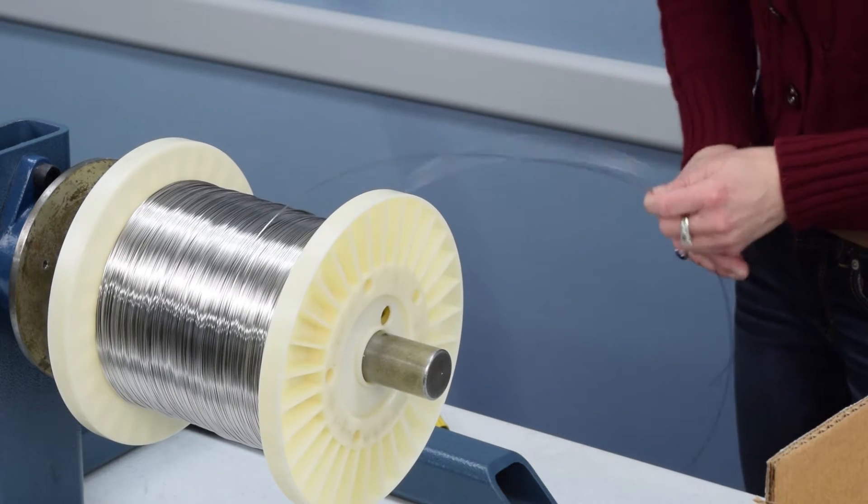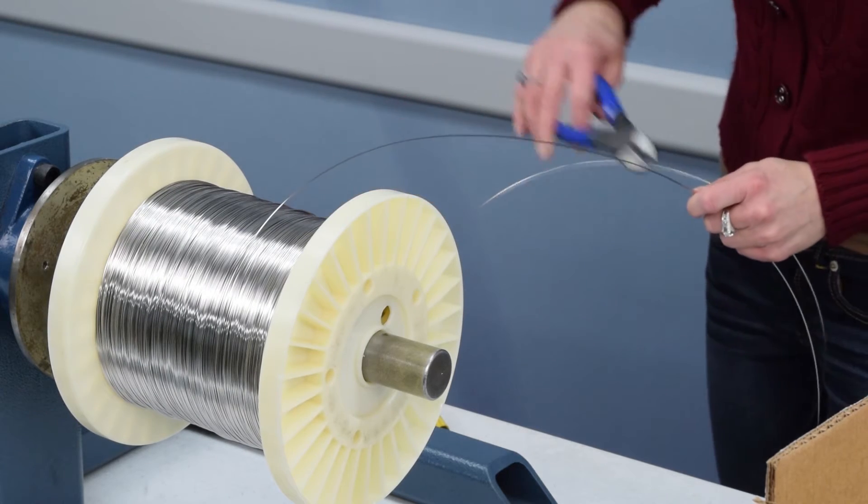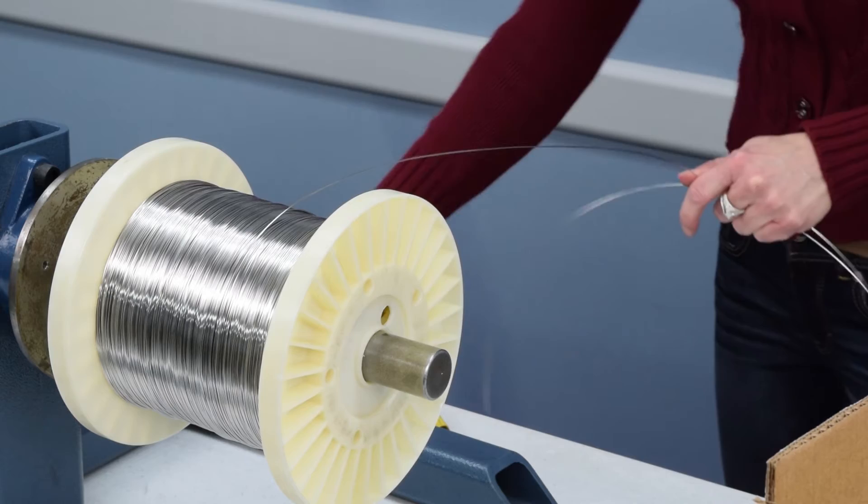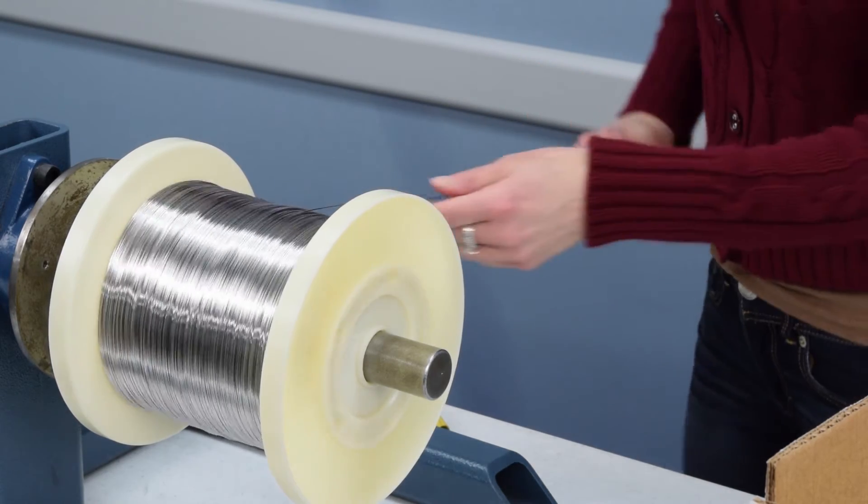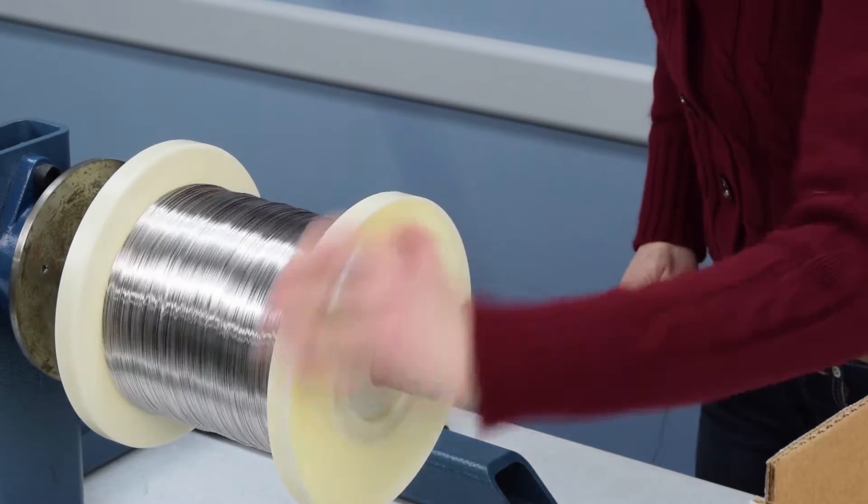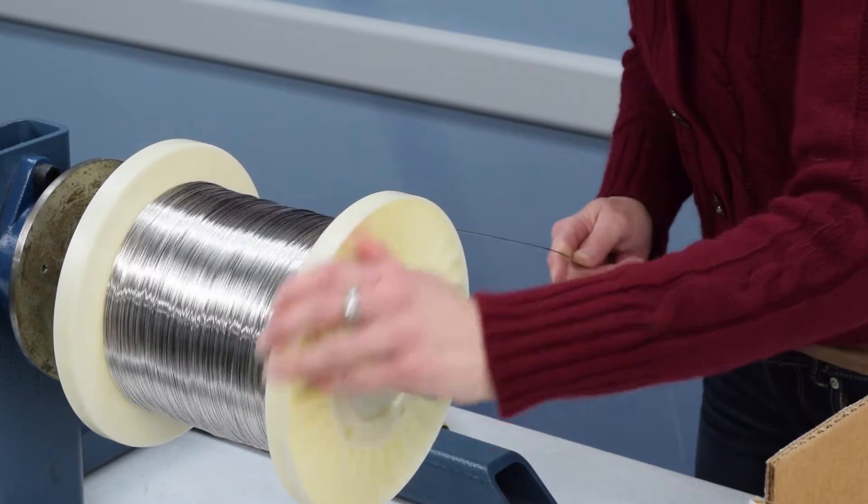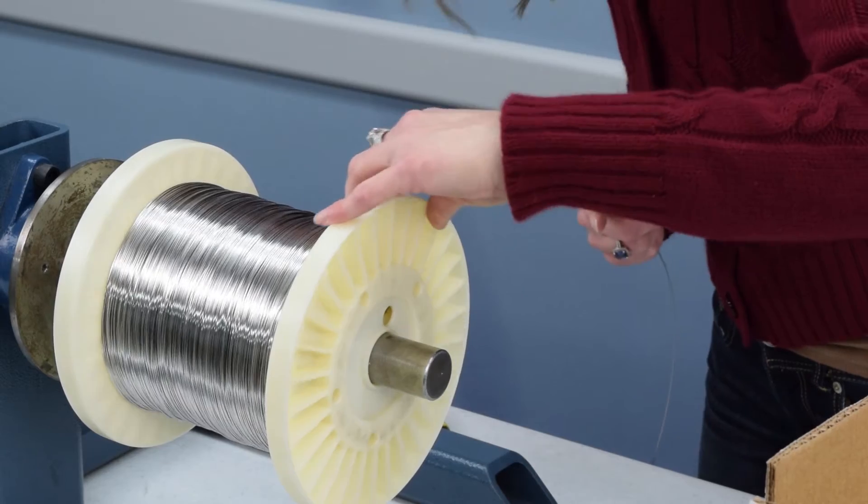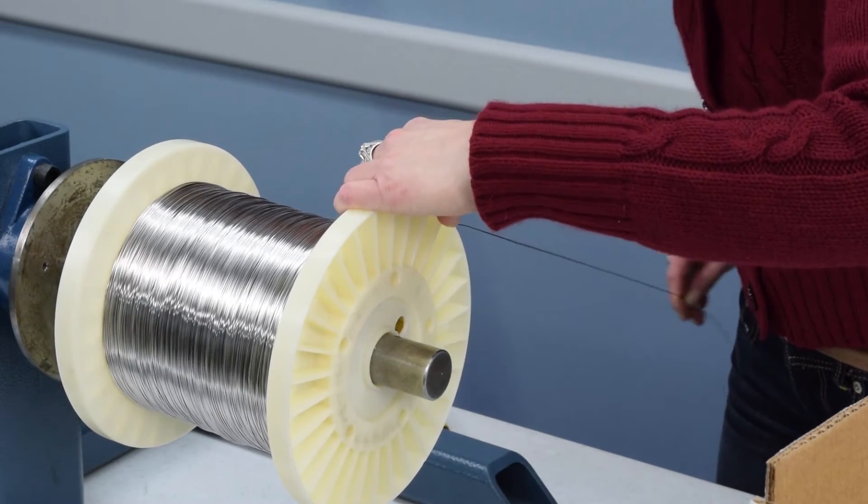Next, cut and remove your sample, once again taking care to keep tension on the wire. Once your sample is cut, walk the wire over to the edge, loop through the hole twice using your pliers to tighten.